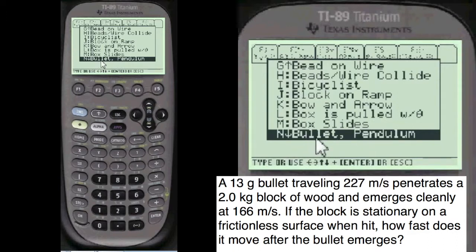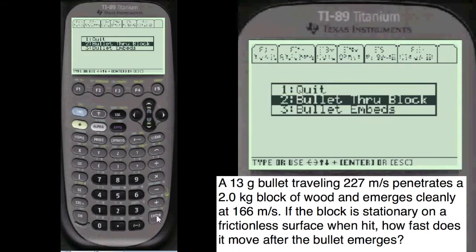Now to get there fast, I could have pressed alpha and then number 6, which is the N. See the little N over the 6? And that one I got there too. I would press enter here. Bullet through block. It was menu driven.